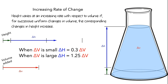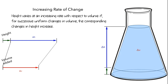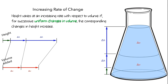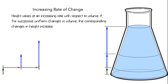I'll add some lines to show the connection between the amounts of change in volume and the corresponding amounts of change in height. Let's think about the idea of uniform changes in volume. To do this, let's split the amount of change in volume into two equal-sized parts — these are successive uniform changes in volume. Next, to make things a little easier to see, let's rotate the height bar. For the first amount of change in volume, the amount of change in height is about three-quarters as large as the amount of change in volume. For the second fixed amount of change in volume, the amount of change in height is roughly twice as large as the amount of change in volume. So for these two successive uniform changes in volume, the corresponding changes in height are increasing.